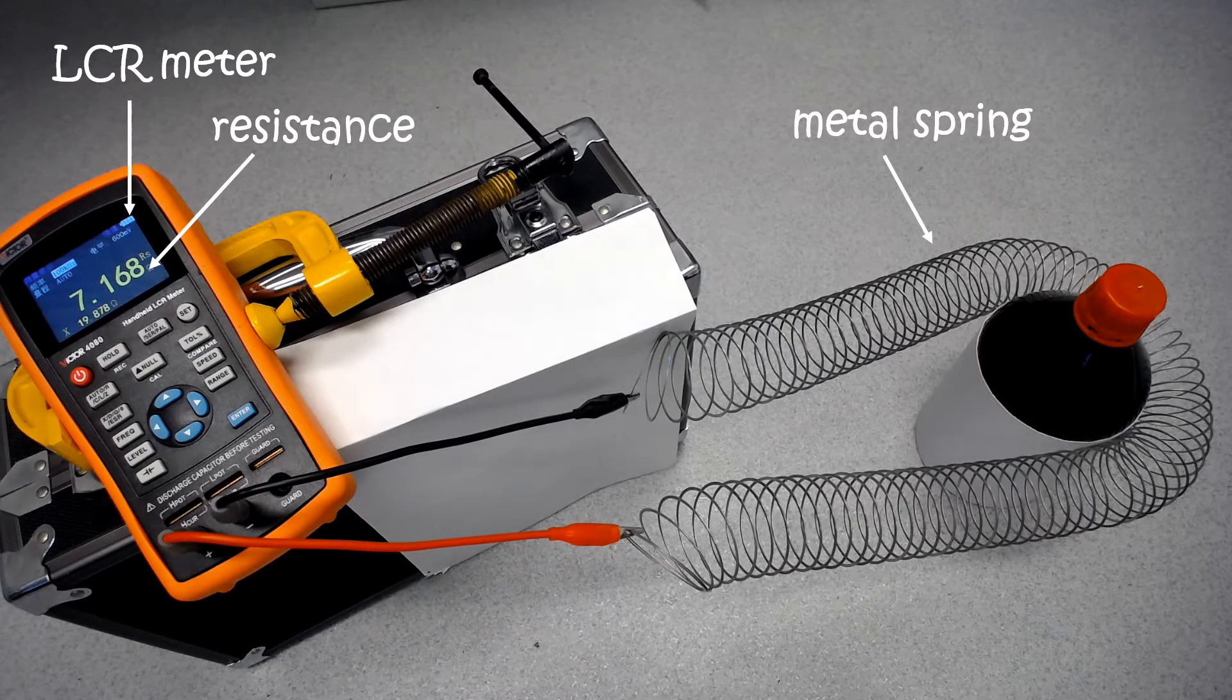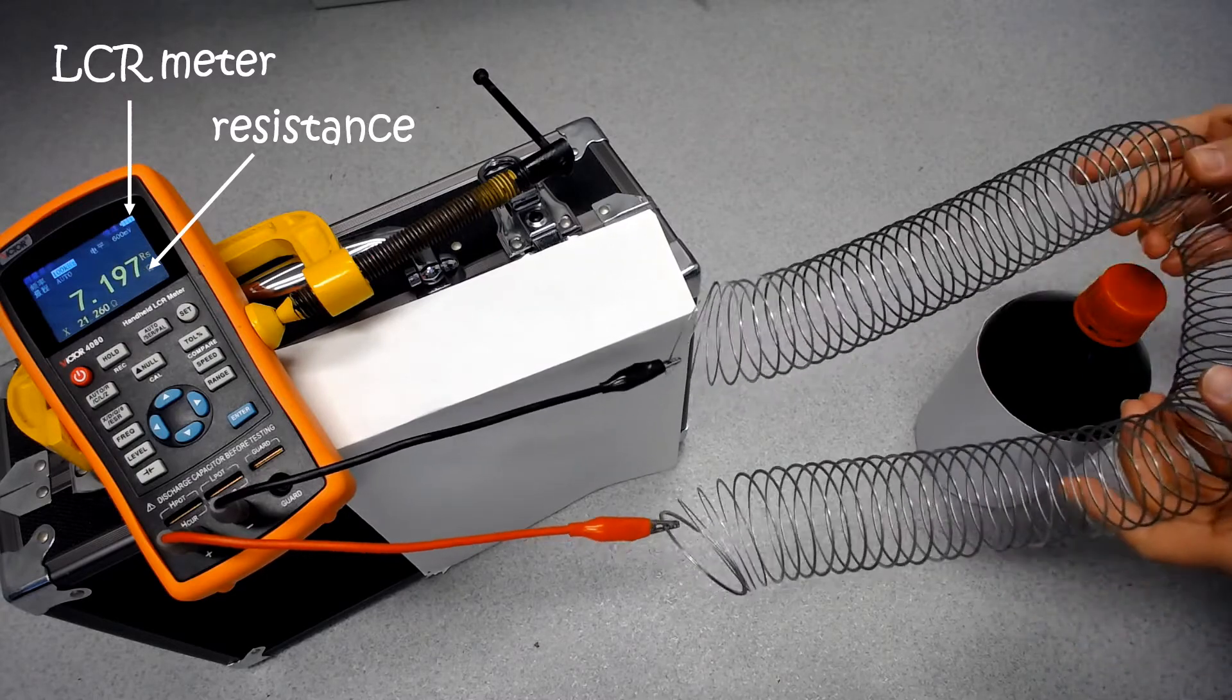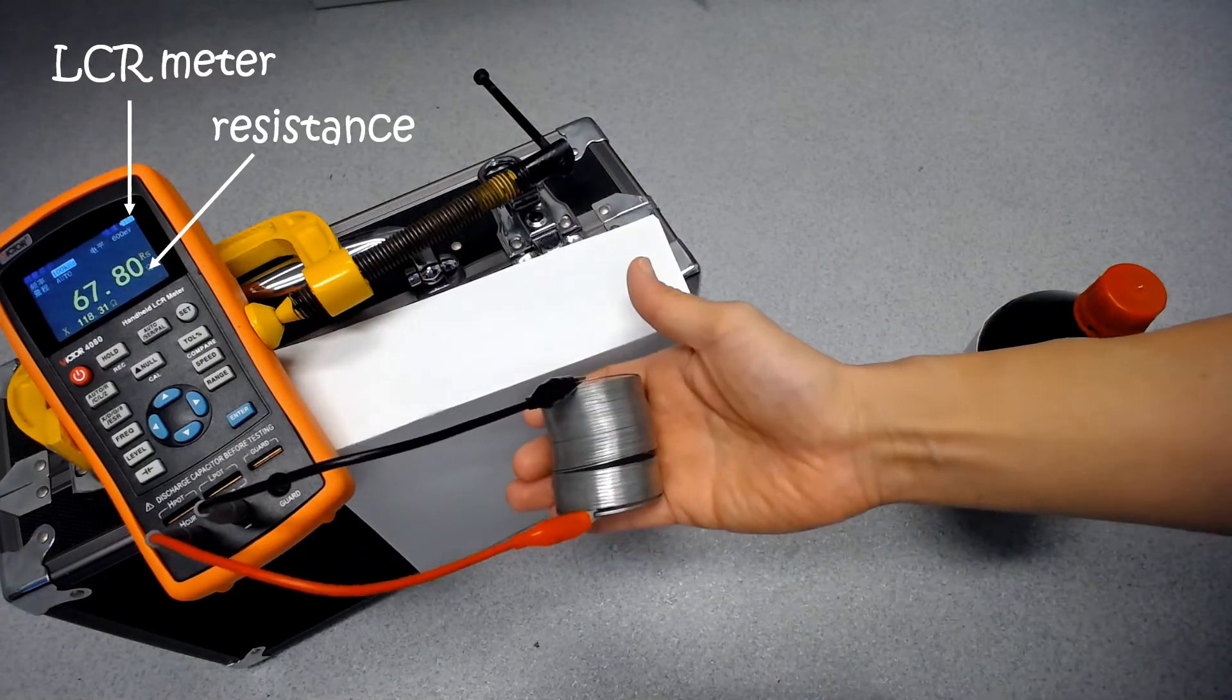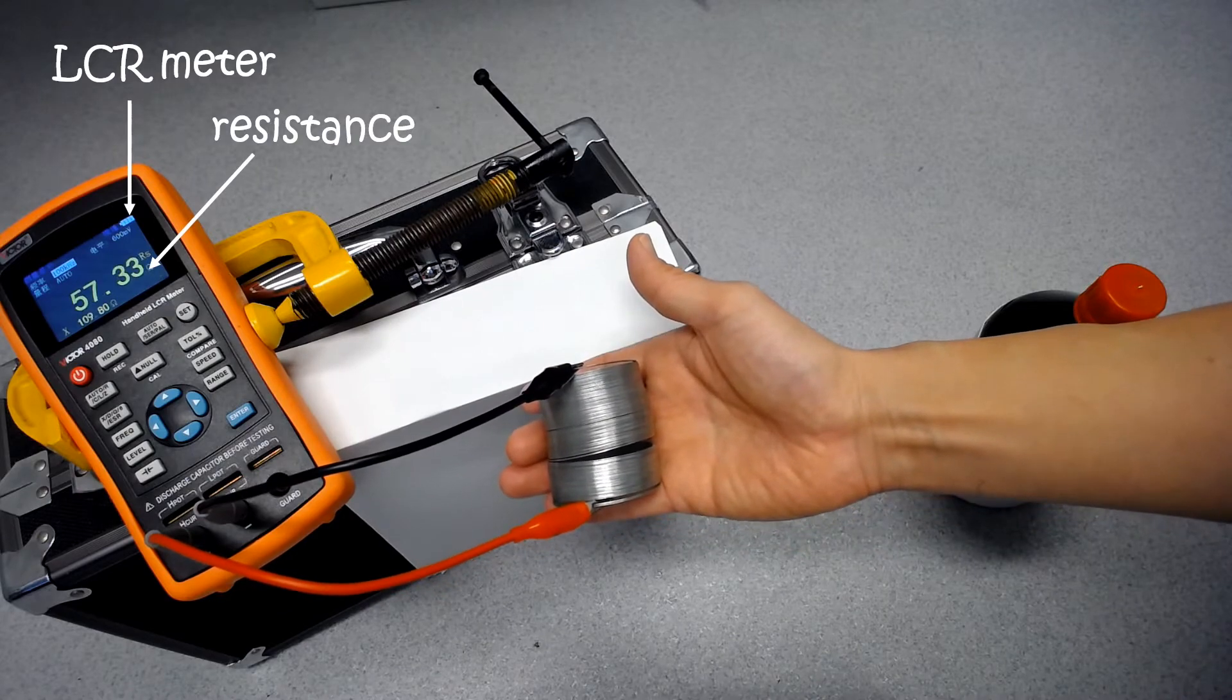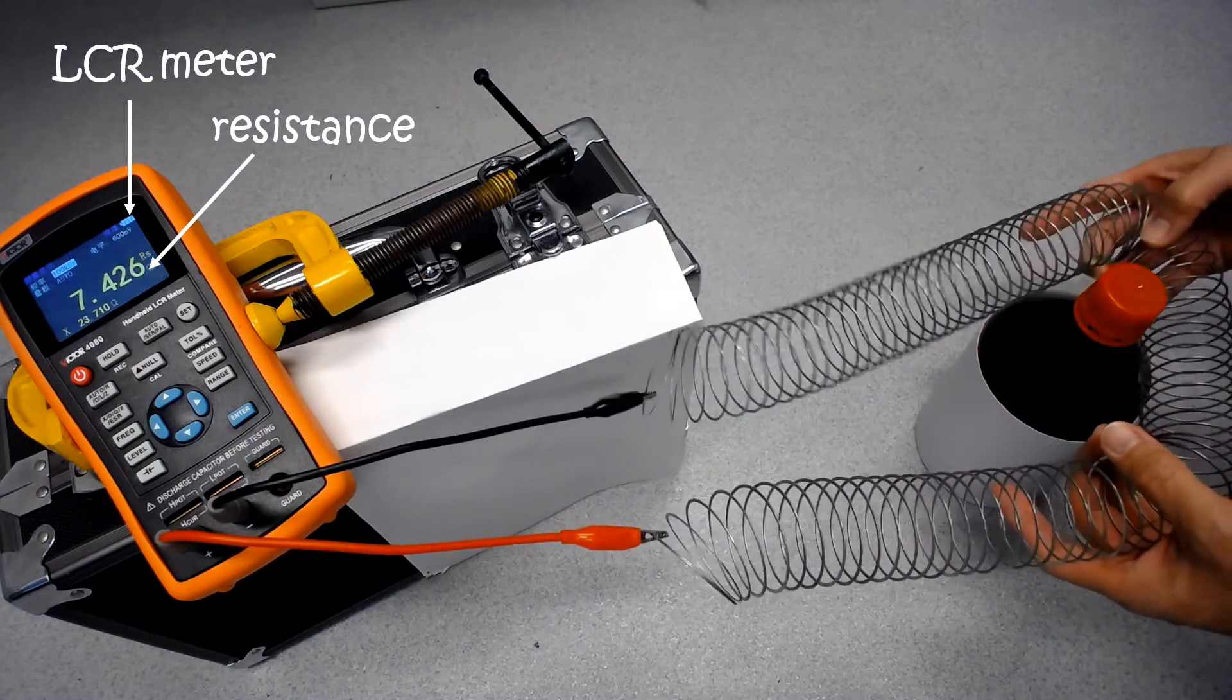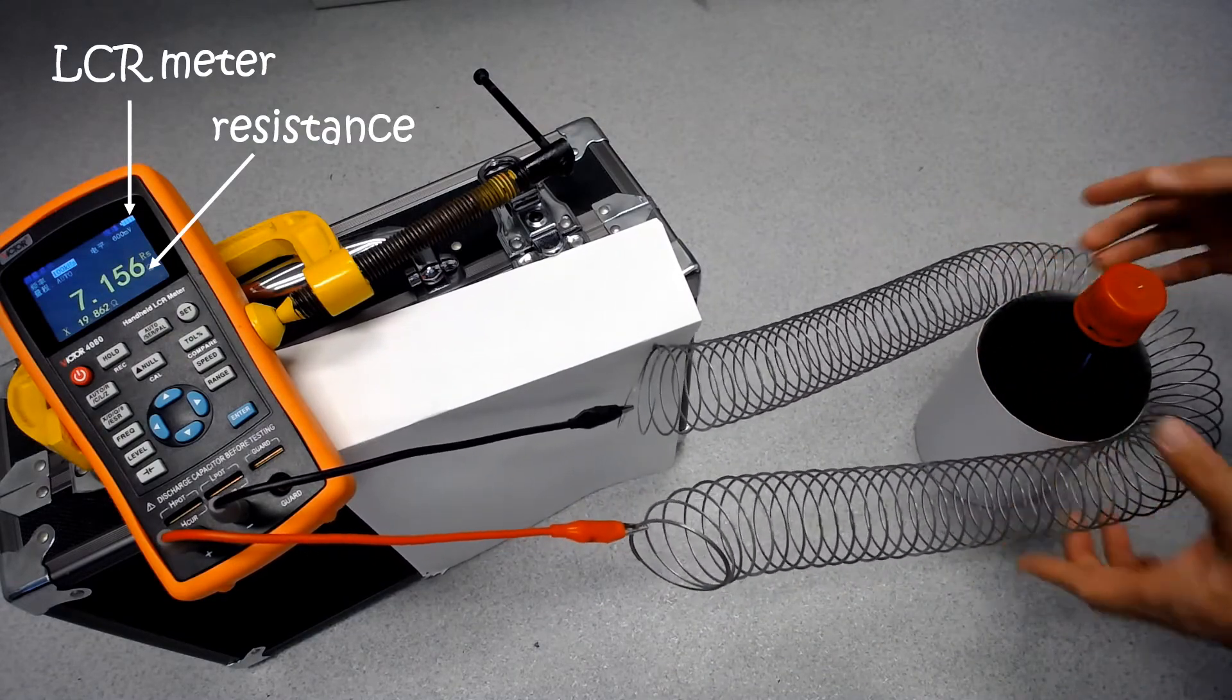Now, I will show you one more trick. When I let the spring collapse, the resistance increases. But when I stretch out the spring again, the resistance returns to the values before. Pretty cool, eh?